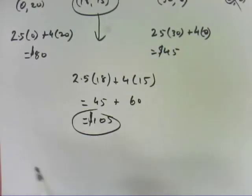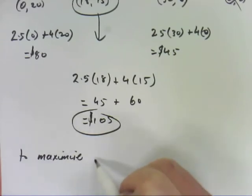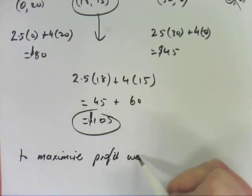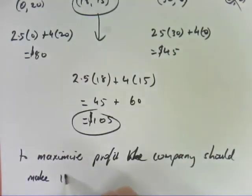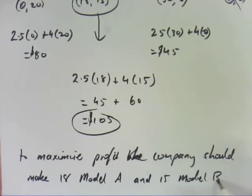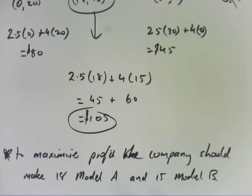Now that's not enough to say it's that point there. What you now need to do is go back to your original question where you define your variables and you put it back into the original question. So to maximize profit, the company should make 18 model A's and 15 model B. That's what you need to do to finalize it. Answer it in words with the original stuff from the question. So that's linear programming. I'm not going to do an application because it's the same thing. All you've got to do is practice getting the information out of the question and getting it into a table or getting into those inequations and going from there.